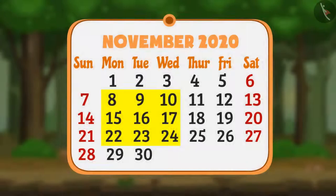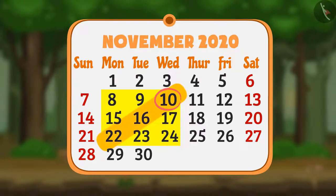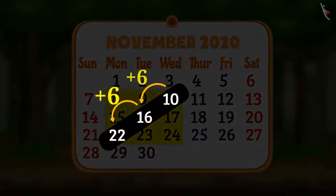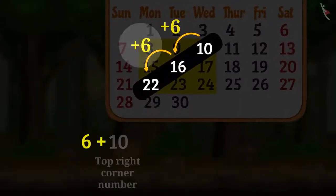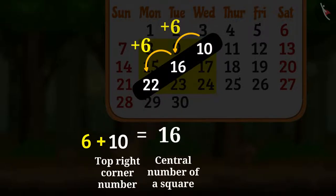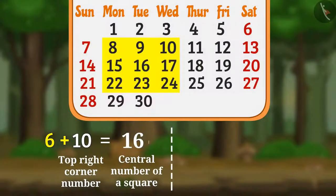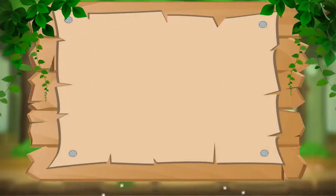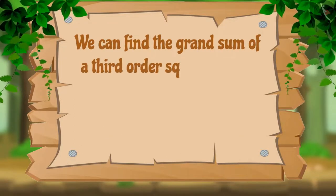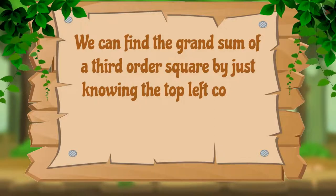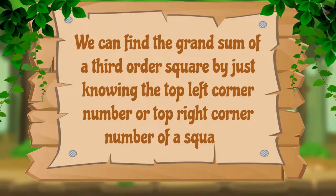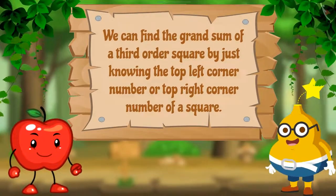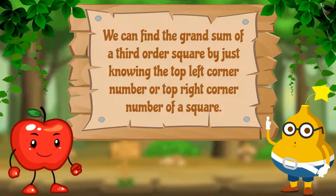Api shares a secret: in this square the top right corner number is 10. In a calendar, the numbers in the right-top to left-bottom diagonal increase by six, so adding six to 10 gives the central number, 16. Then multiplying the central number by nine gives the grand sum. We can find the grand sum of a third order square by just knowing the top left corner number or the top right corner number.